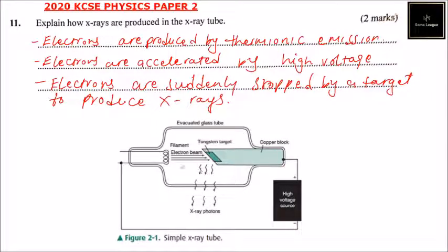So you can see there is high voltage connected to the x-ray tube. Electrons are produced, they are accelerated by the high voltage, they hit the target here. The target here is tungsten.